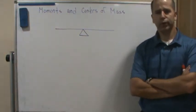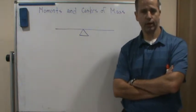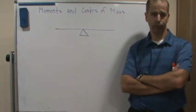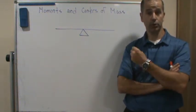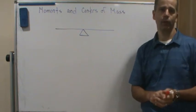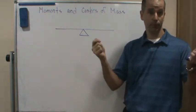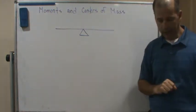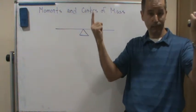Welcome. Today we're going to start talking about centers of mass, beginning with a one-dimensional example. In physics, the center of mass is the balancing point of an object. For example, basketball players balance the basketball on their finger, or performers spinning plates on sticks — they're balancing the plate at its center of mass.